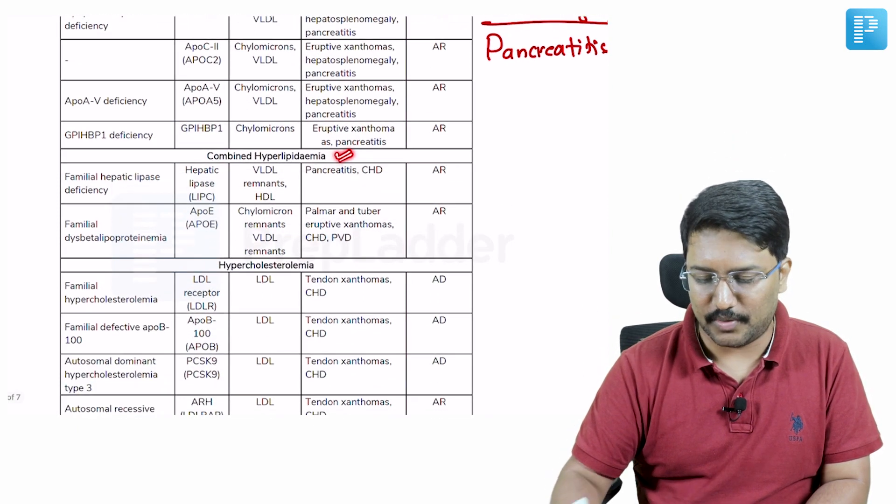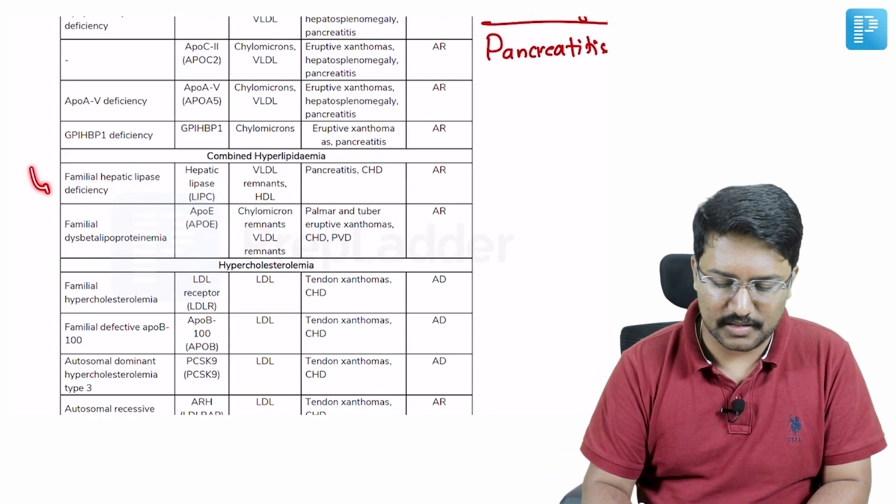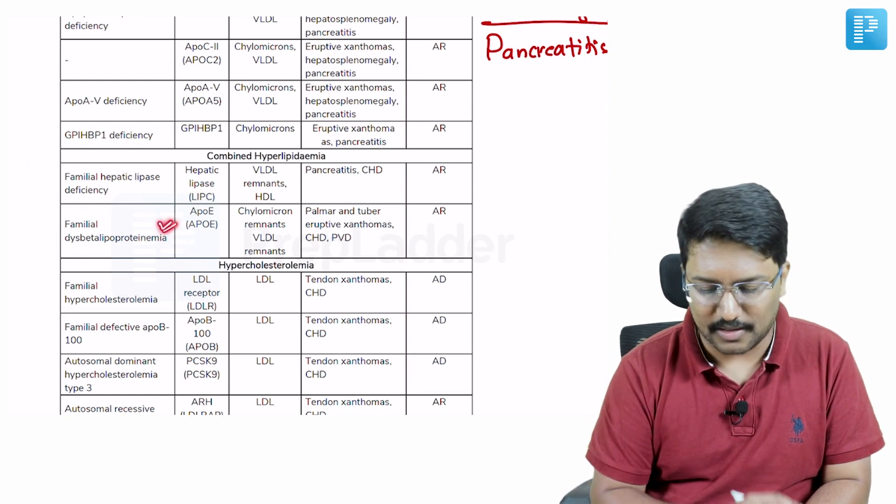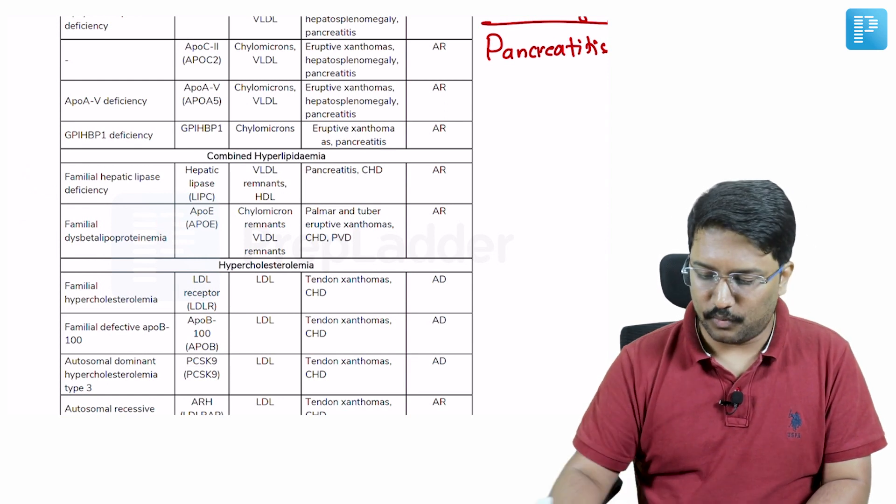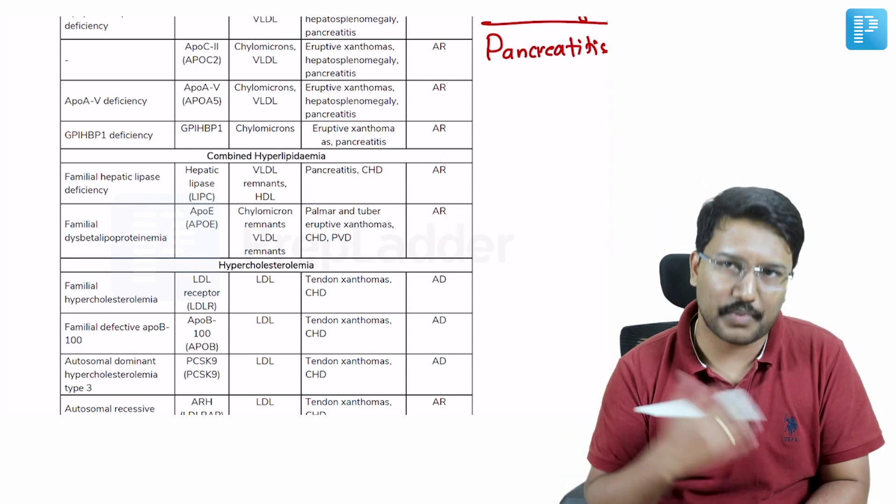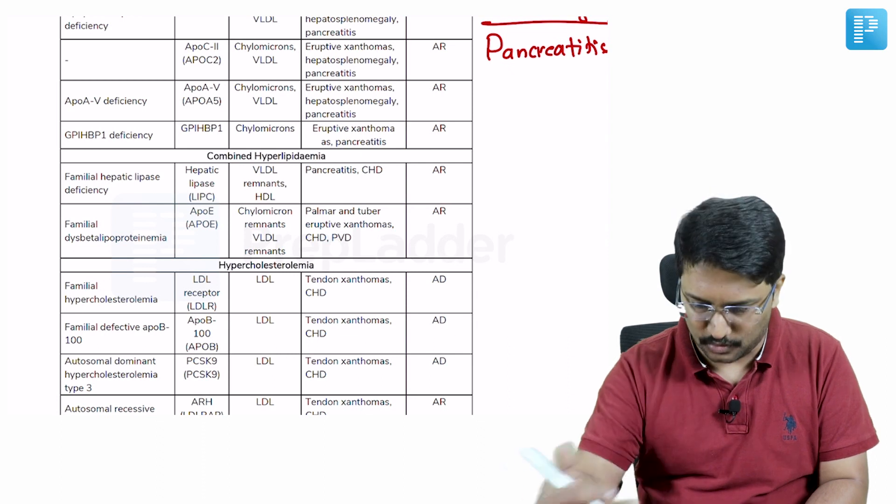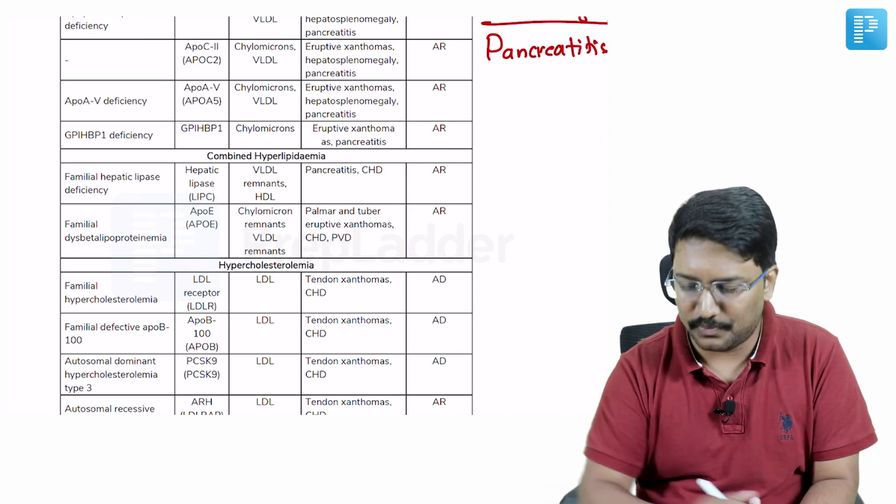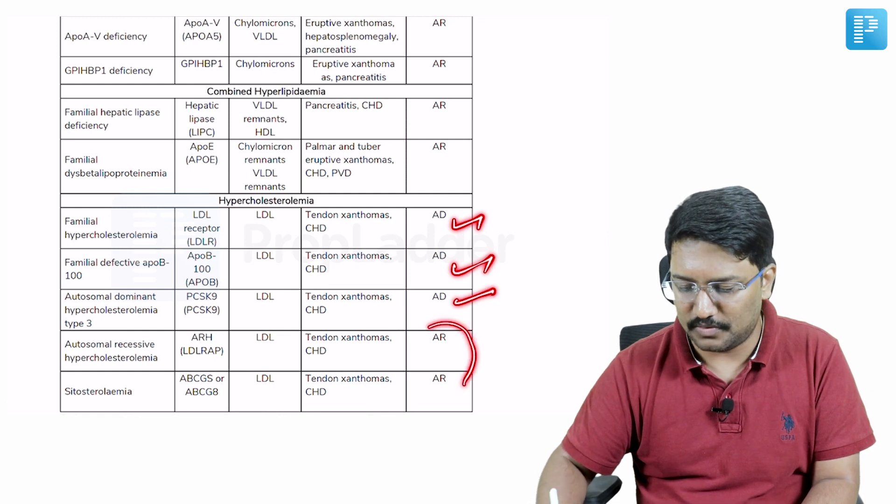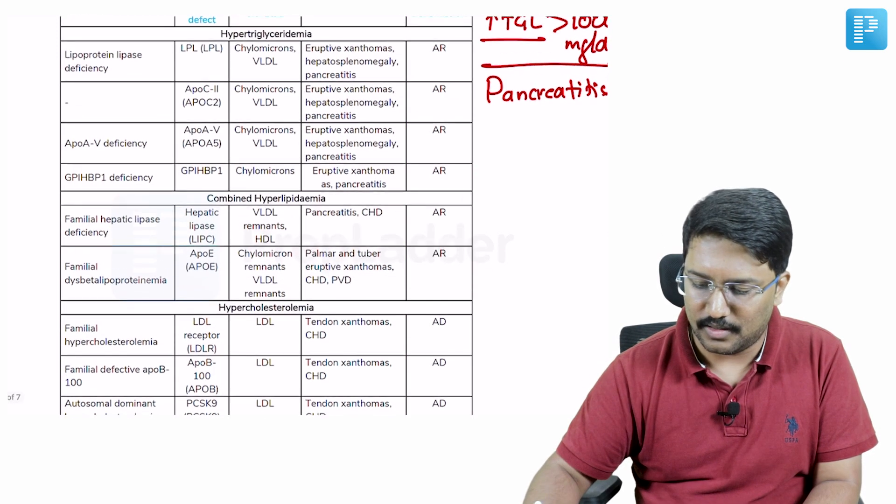Then when you look at the combined hyperlipidemia, you have two entities: familial hepatic lipase deficiency and familial dis-beta lipoproteinemia. Both of these are again inherited as autosomal recessive conditions, so pretty easy for us to remember again. Looking through this table, it makes it much easier. All I need to do is identify which ones are autosomal dominant, otherwise the majority are autosomal recessive.